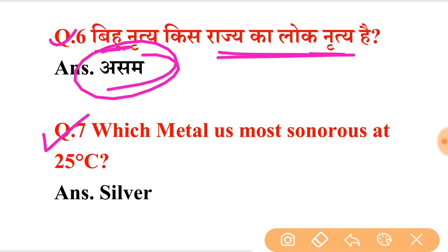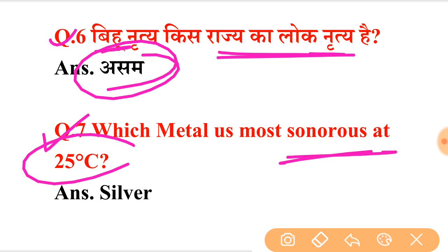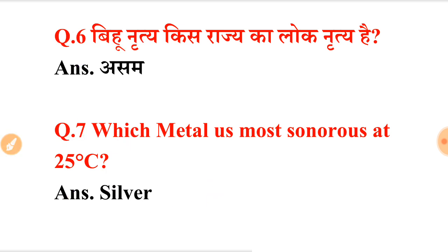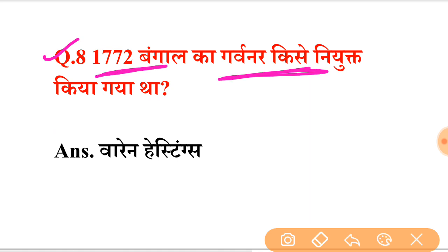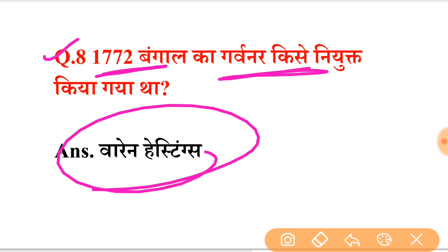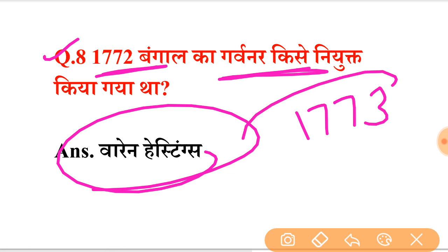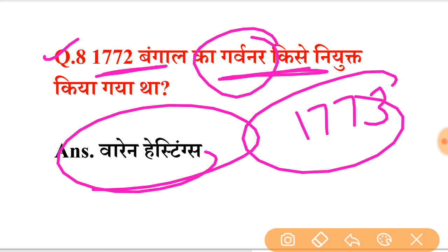Which metal is most sonorous at 25 degrees Celsius? The answer is Silver. Next question: who was appointed Governor of Bengal in 1772? Warren Hastings was appointed Governor of Bengal in 1772. Note that in 1773 he was made Governor-General of Bengal.